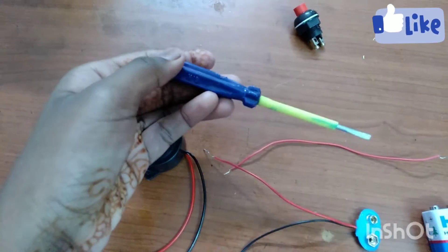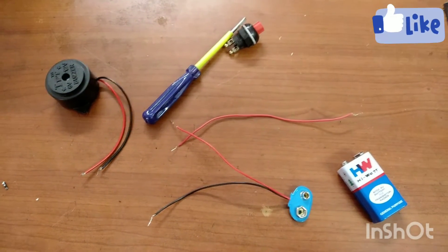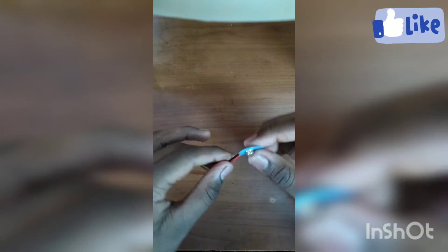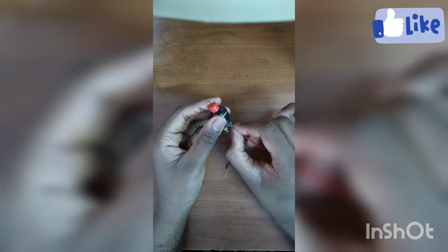screwdriver, and a press switch. Okay, now we are going to start. Now I'm taking the battery connection, and I'm taking this press switch and connecting this positive wire in this one hole of the switch.